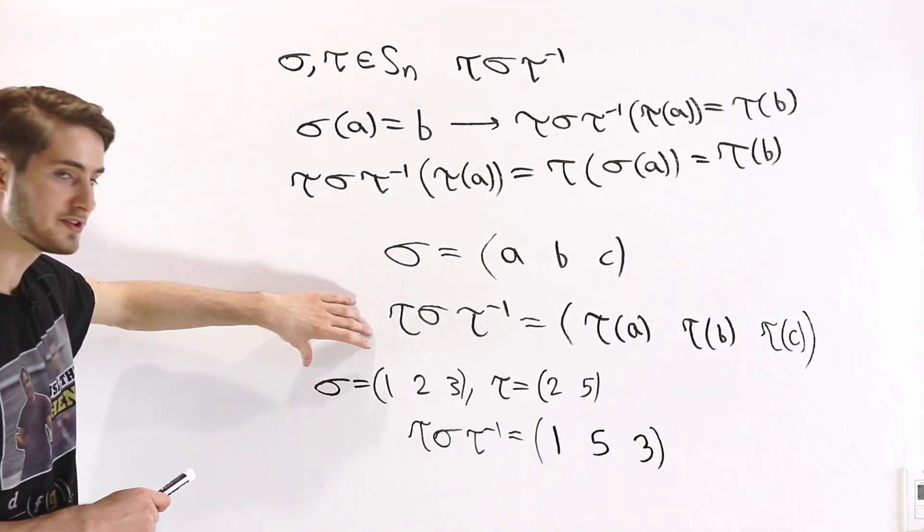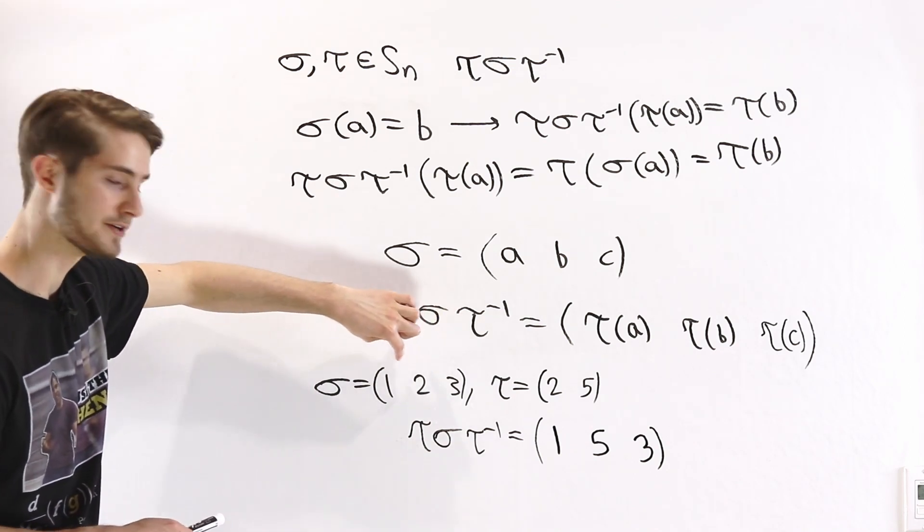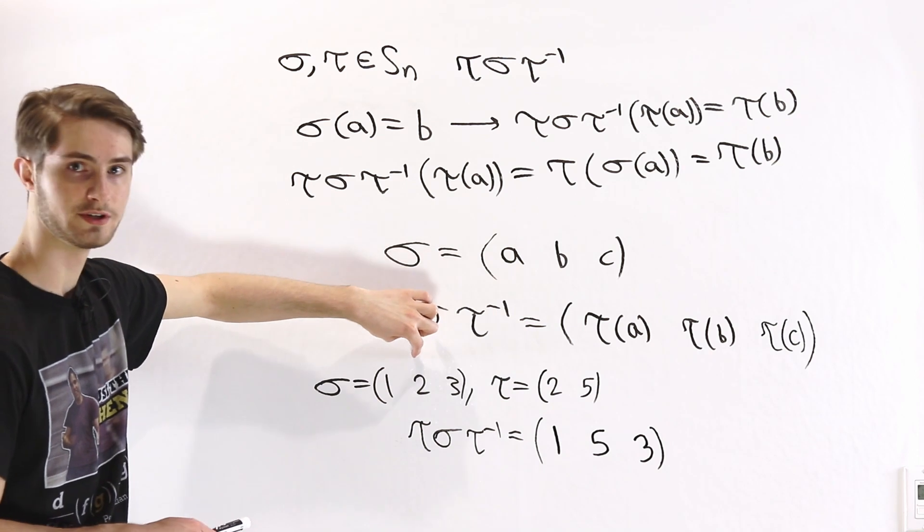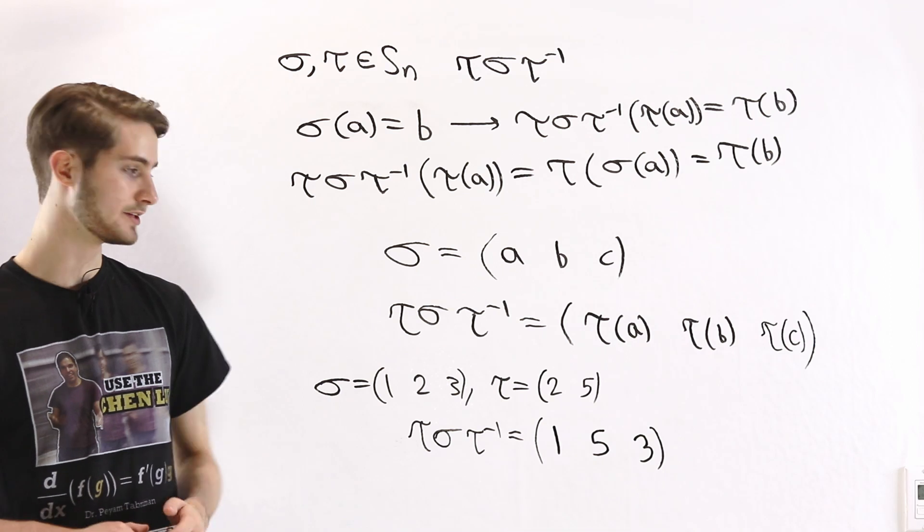What happens is, we take the cycle from sigma, and all we do is replace every letter in here with tau of that input.